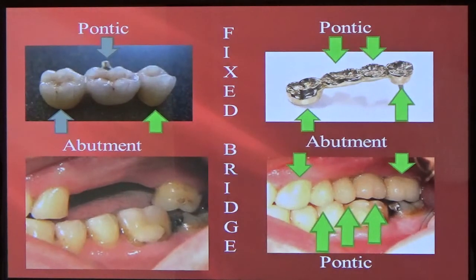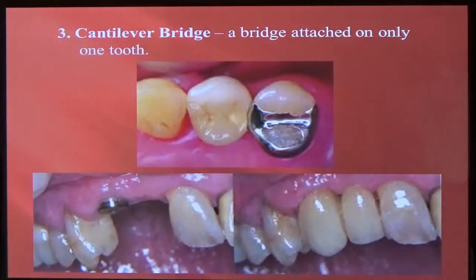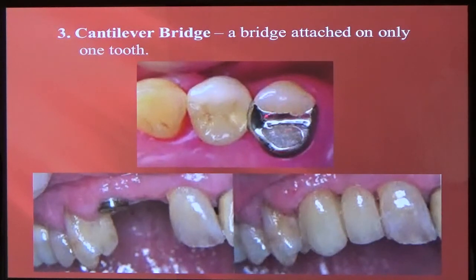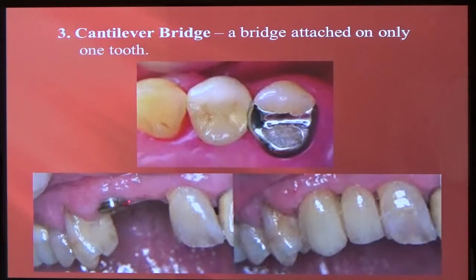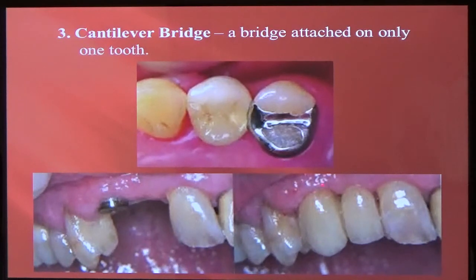Actually, that's a five-unit bridge — two abutments and three pontics. A cantilever bridge is a bridge that's only anchored on one side, so you have one abutment and this tooth is hanging on to one tooth. Here we have an implant that you can see the cap on — when that's taken out, we can put an implant crown that's screwed onto that implant. This is a cantilever lateral incisor — only anchored on one tooth. That's a cantilever bridge.